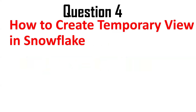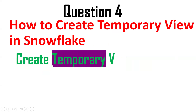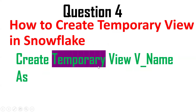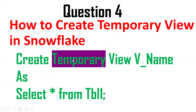Next question: how to create a temporary view? In Snowflake we can create temporary views using the TEMPORARY keyword: CREATE TEMPORARY VIEW view_name AS SELECT * FROM table_name. Without the TEMPORARY keyword it is a normal non-materialized view. The temporary view is only available within the current session.